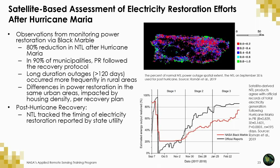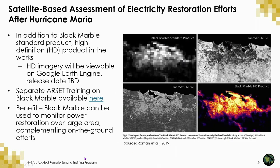Overall, the authors demonstrated that nighttime lights can be used to monitor electricity restoration efforts after a natural disaster. The satellite data used by Black Marble is beneficial for utilities because it is collected automatically and requires no on-the-ground effort or reporting by crews or energy customers. Nighttime light data via Black Marble is available globally. A high-definition version of the product is in the works and will be available via Google Earth Engine, enabling users to access nighttime light data at the neighborhood level.